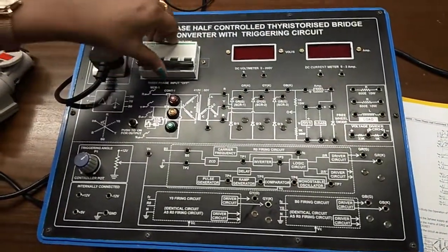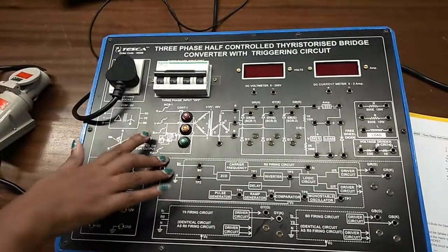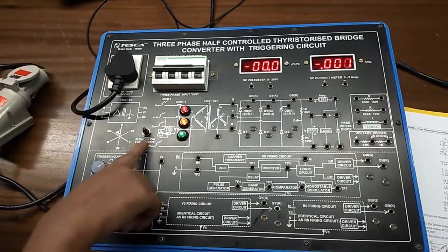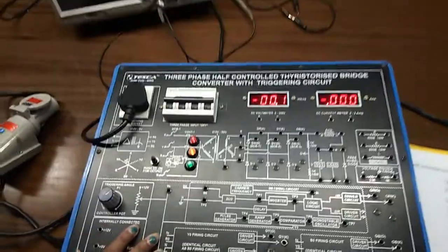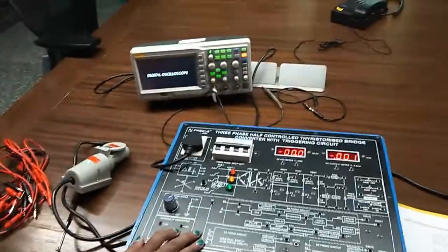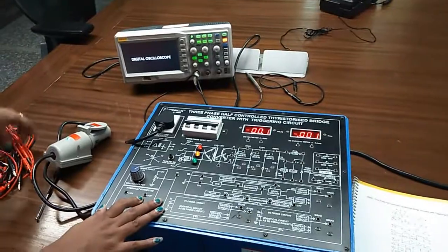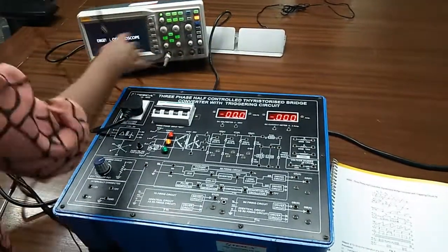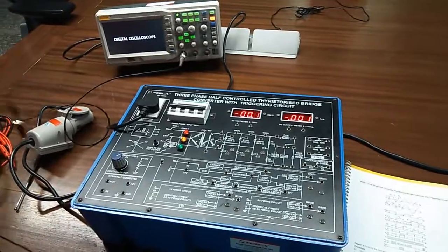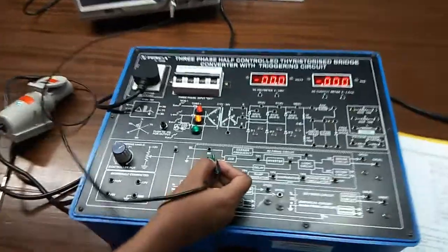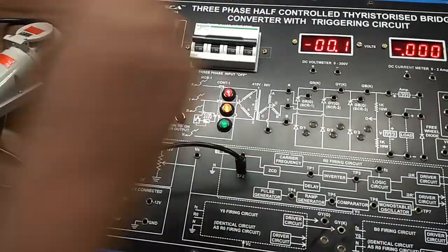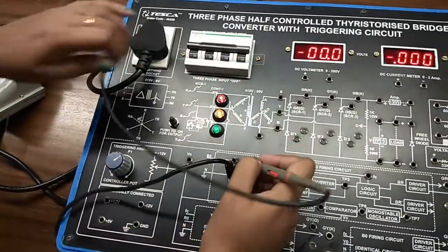First turn on the kit like this and for the output push this button and then turn on the CRO. This is our ground button. Connect the negative terminal of CRO here and the positive lead here.